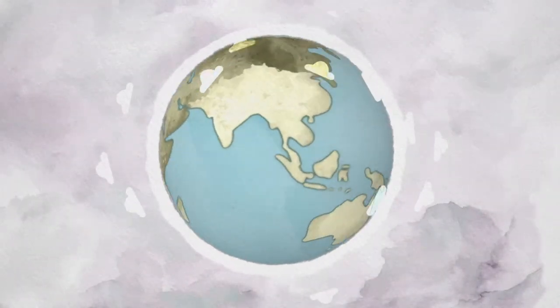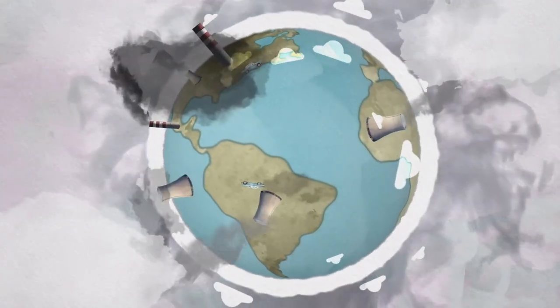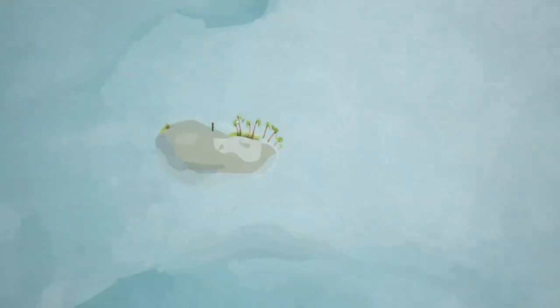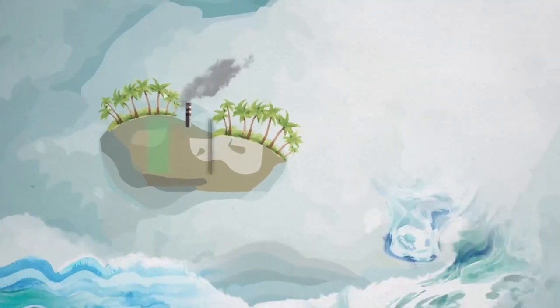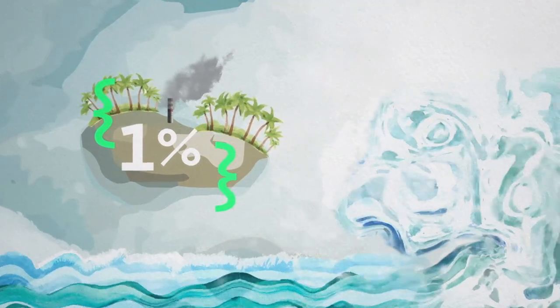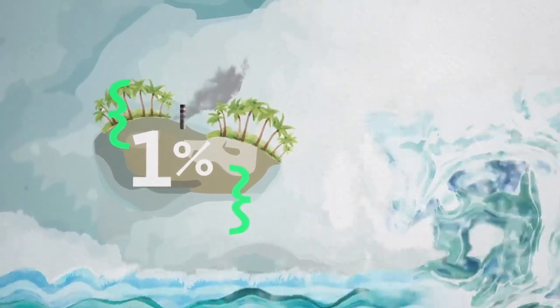Climate change is hailed as a global issue, but not everyone is equally responsible for the harm done to our planet. According to the United Nations, small island developing states are responsible for less than 1% of CO2 emissions, and yet they are the most vulnerable to the changes happening to our planet.